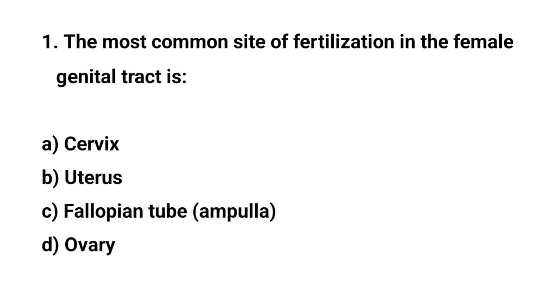Question No. 1. The most common site of fertilization in the female genital tract is? Right answer is C: Fallopian tube.